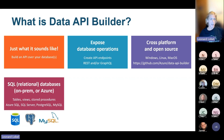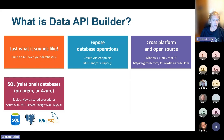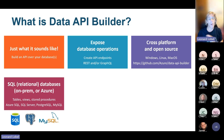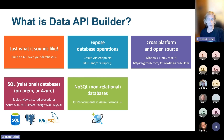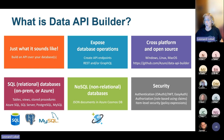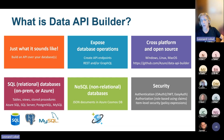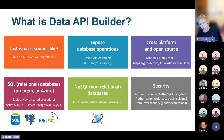It supports traditional relational SQL databases, whether on-prem or in the cloud on Azure — exposing tables, views, and stored procedures out of Azure SQL, SQL Server on-prem, Postgres SQL, or MySQL. And beyond that, in the non-relational NoSQL space, JSON documents with Azure Cosmos DB. Security is fully supported: authentication, JWT tokens, easy authentication and authorization. We'll see demos using role-based authentication using JWT, as well as item-level security using policy expressions to control how much or how little we expose through our API.